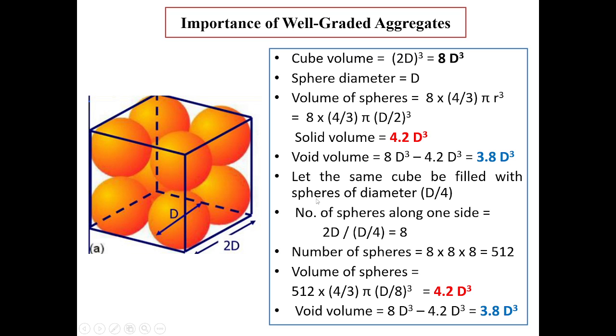As case 2, I will take the same cube, but now I will fill it with spheres of diameter D/4. In case 1, the diameter of each sphere was D and now it is D/4. The number of spheres along one side, that means along one side of the cube, is that length divided by the diameter of each sphere. That is 2D divided by D/4, which is 8. But I have to fit the spheres along all three directions. Therefore, number of spheres will be 8 × 8 × 8.